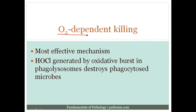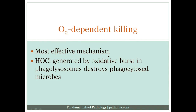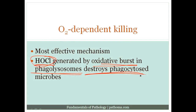In O2-dependent killing, which is the most effective mechanism, HOCl — i.e. bleach — is going to be generated by the oxidative burst in the phagolysosome, and it's this HOCl that's going to play the key role in destroying the phagocytosed microbe.